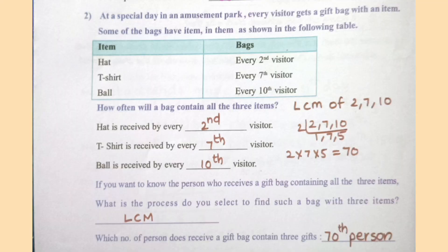At a special day in an amusement park, every visitor gets a gift bag. Some bags have items: hat for every 2nd visitor, T-shirt for every 7th visitor, ball for every 10th visitor. How often will a bag contain all three items? Process: LCM. The person who receives a gift bag containing all three items is the 70th person.